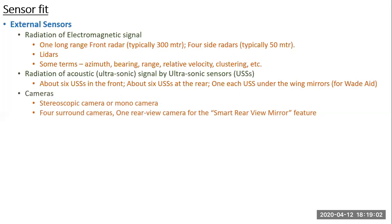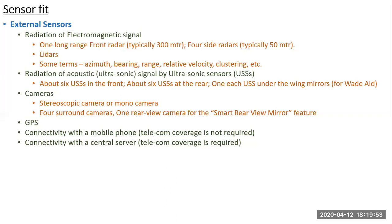A stereoscopic camera is like our eyes — two cameras looking at the same object from slightly different positions. Because the left eye and right eye see the same object slightly differently, you get a judgment of depth. You may have experienced this yourself: if you cover one eye and try to play cricket, you won't be able to judge the depth of the ball. We perceive depth precisely because we have two eyes. Cars are also connected to GPS and mobile connectivity.